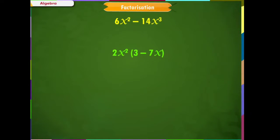So, we will write 2x² and then write the remaining terms inside the bracket like this. Thus, 2x²(3 - x) are the factors of the given expression.